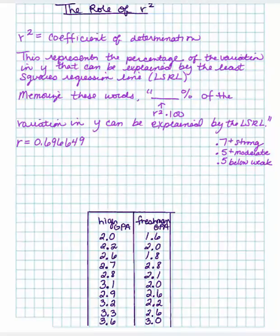So 0.6966, this is almost a strong relationship, moderately strong relationship. R squared, if you take that number and square it, gives you 0.485.